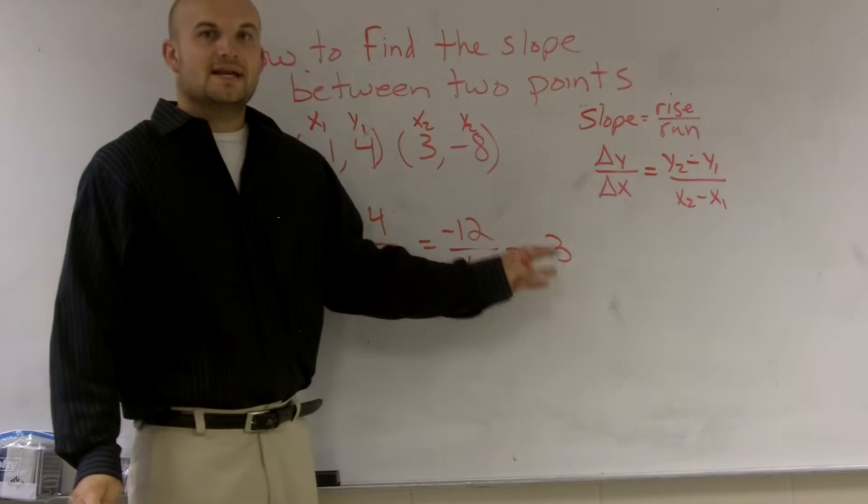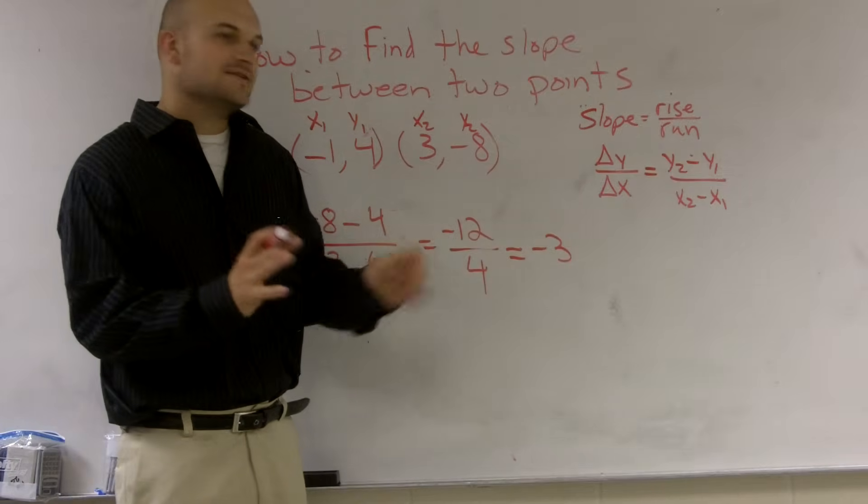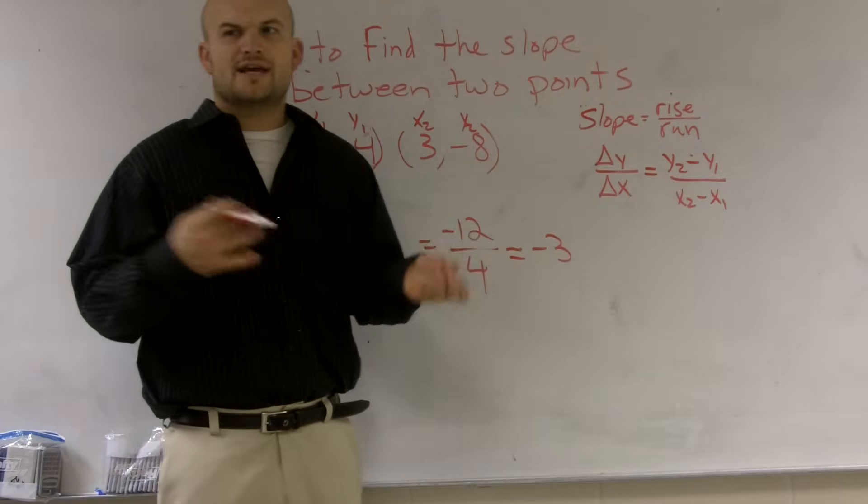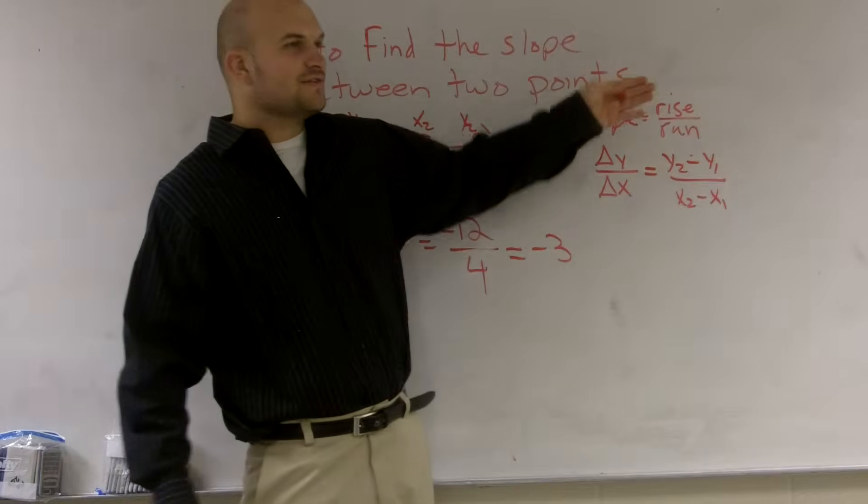So therefore, our slope is a negative 3. And a lot of times, just to let you guys know, a lot of times when you're graphing like a negative 3 and you need to say, oh well, it's not in a rise or a run. What's the rise or a run?